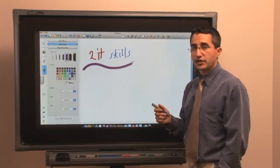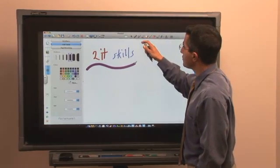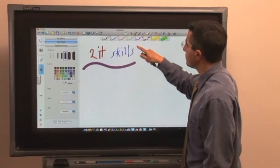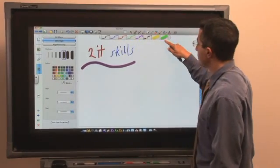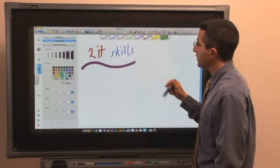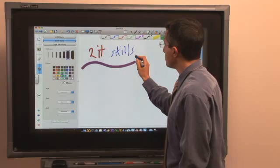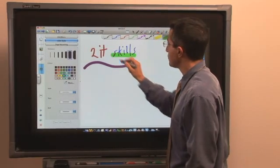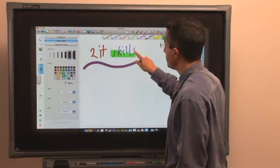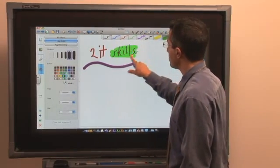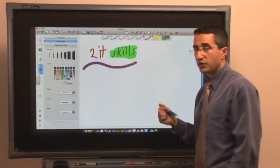There's another way that I can change the attributes, and that's by going directly to the pen tool up here. And I can change this, for example, into the green highlighter. And I can either use the pen to write or I can use my finger to do the writing and highlighting. So both of those ways work.